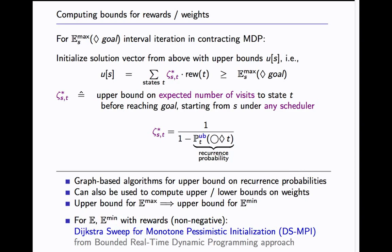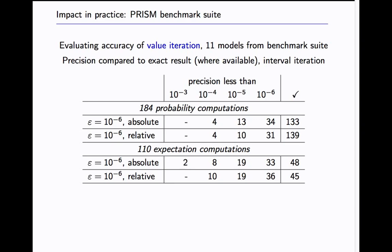We've implemented all of that in PRISM. It's in the current release. We've also shown in the paper how to adapt topological value iteration to topological interval iteration. We did some experiments. The first thing we were curious about was how is the accuracy of value iteration in practice. We used the PRISM benchmark suite and we compared the results with exact results if we have them, which is the case for about half of the computations.